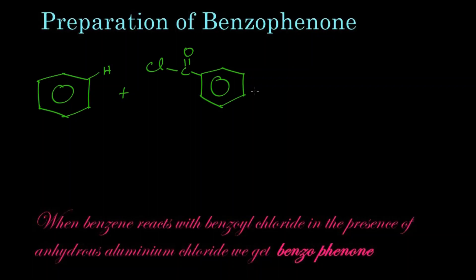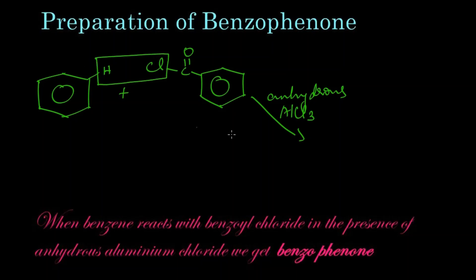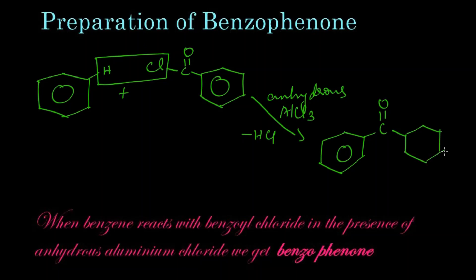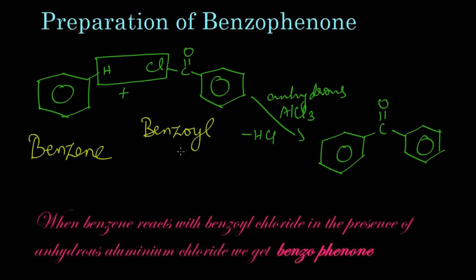This reaction is carried out in the presence of anhydrous aluminium chloride. What happens is very simple — this hydrogen and this chlorine get eliminated as HCl. The remaining parts attach together: this benzene ring, then C double bond O, then the other benzene ring, giving us benzophenone.